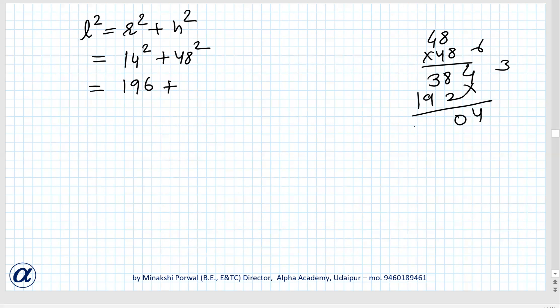Then 12, 13, 2304. 2304 plus 196, so it is 10, 10, 5, 2. 2500.